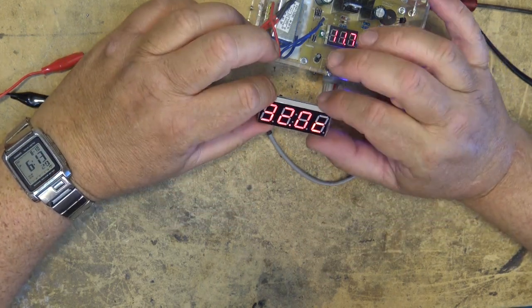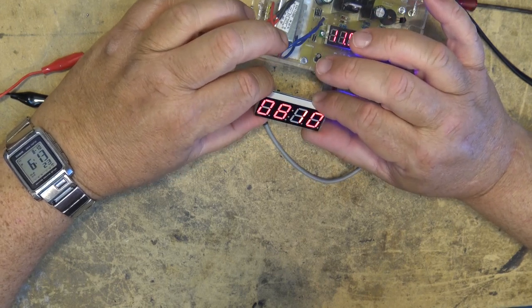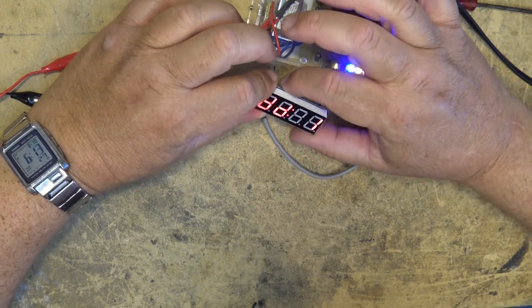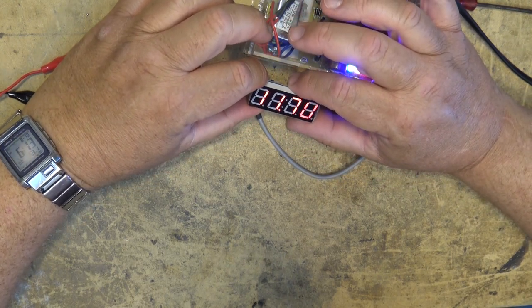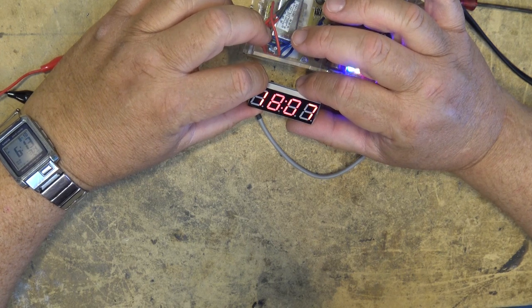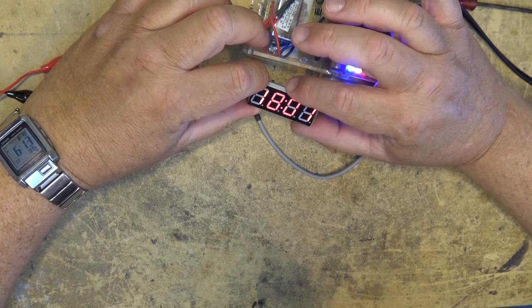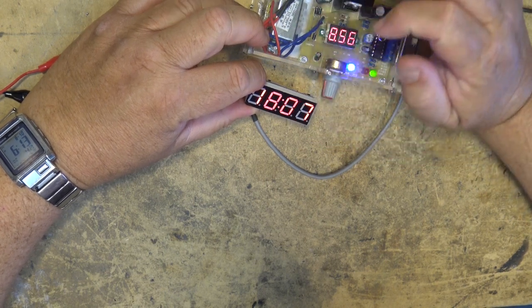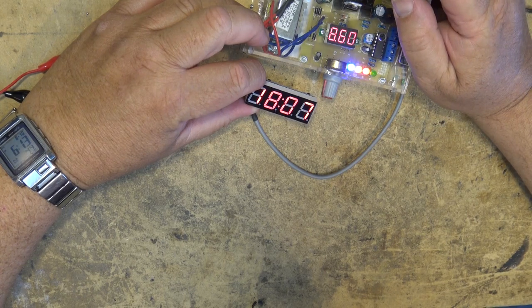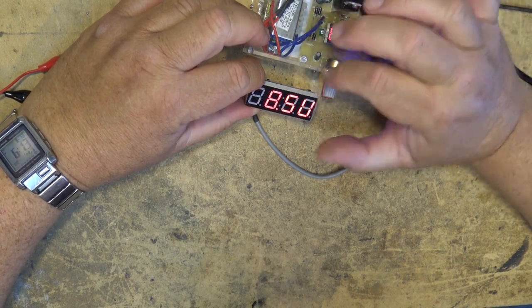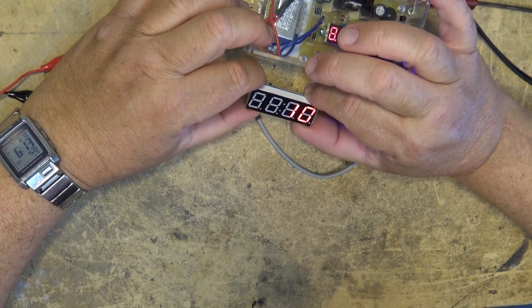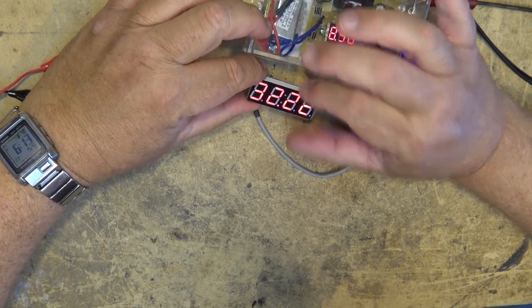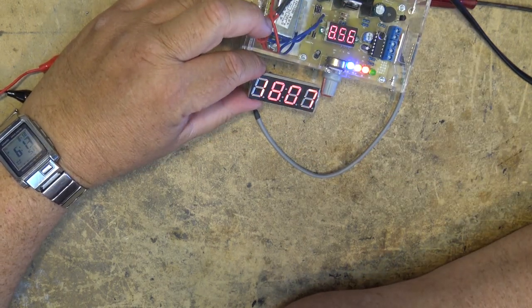Now if I go back in here and change this setting again, let's see what DD one does. DD one switches between the time and the voltage. See, time and voltage, time and voltage. And DD two, so it's just between the time and the temperature.